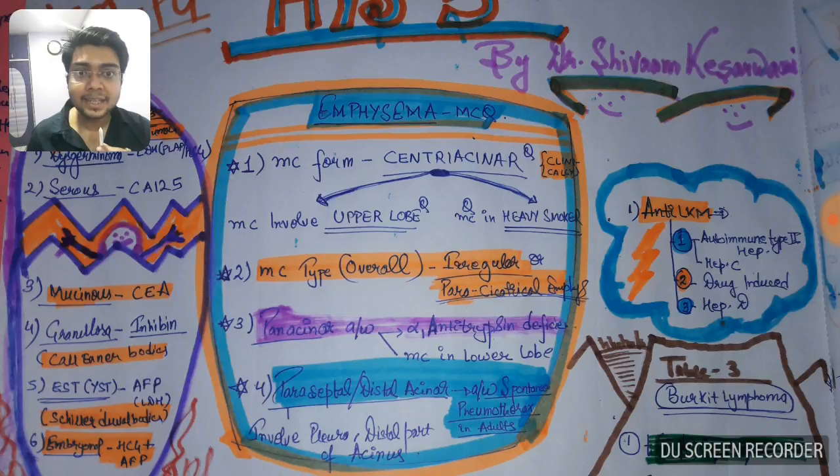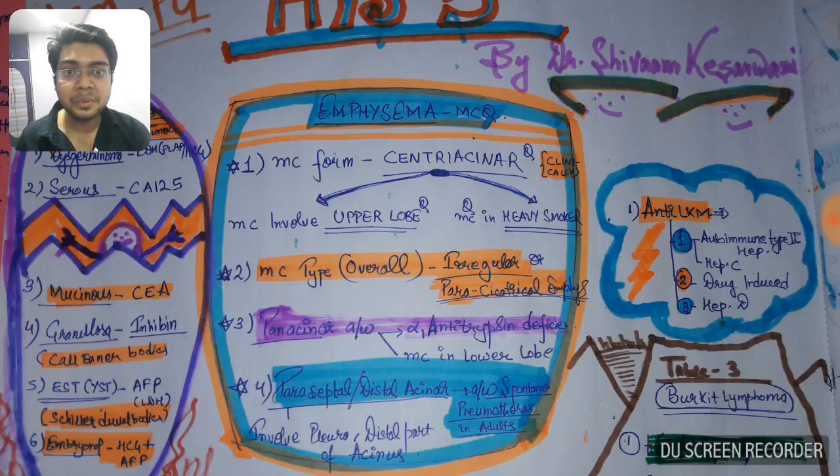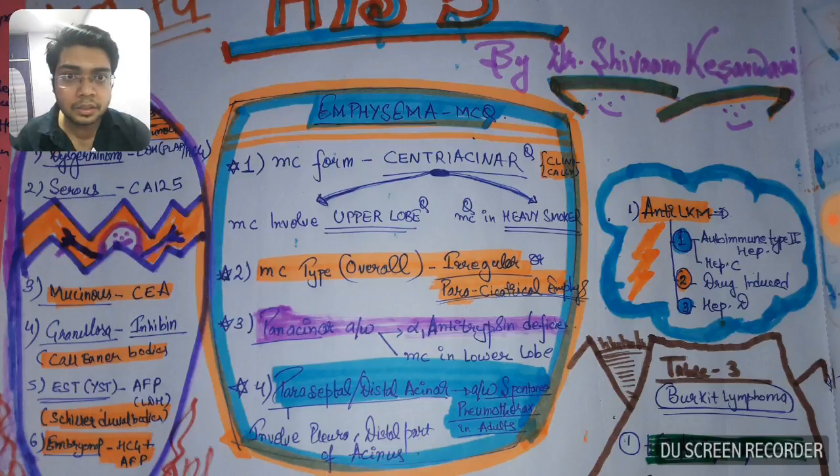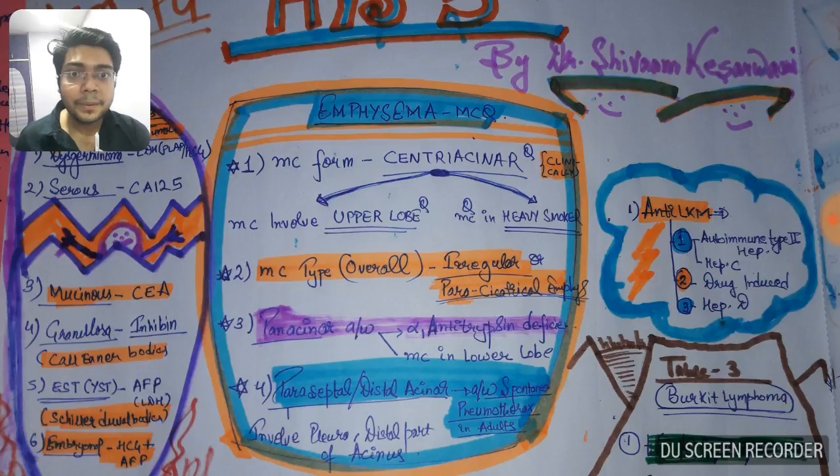You all know why it is the most common: due to heavy smoking, everyone is smoking now, even the medical students. So centriacinar is the most common form and the most commonly involved lobe is the upper lobe.